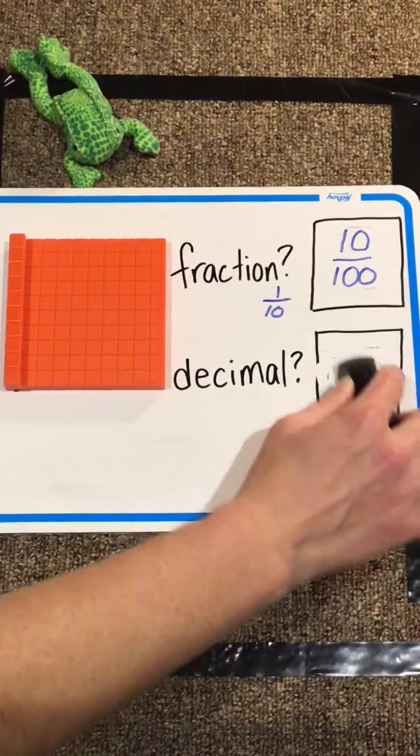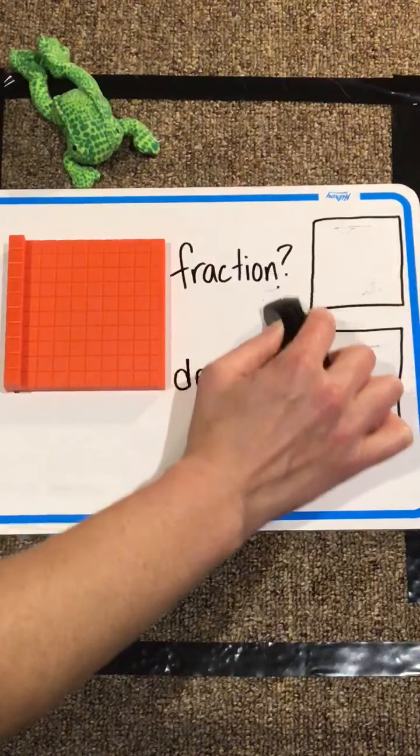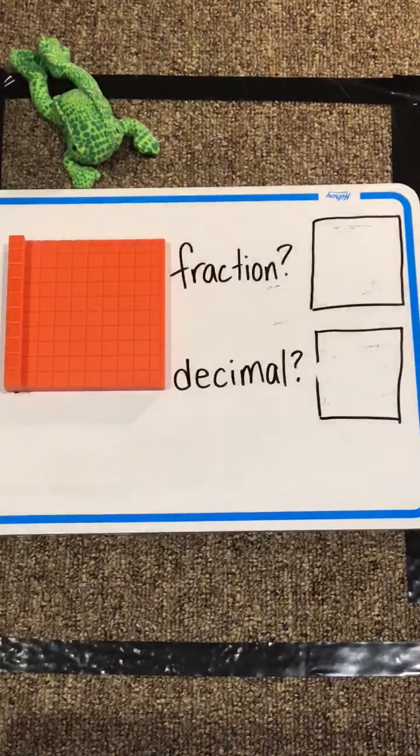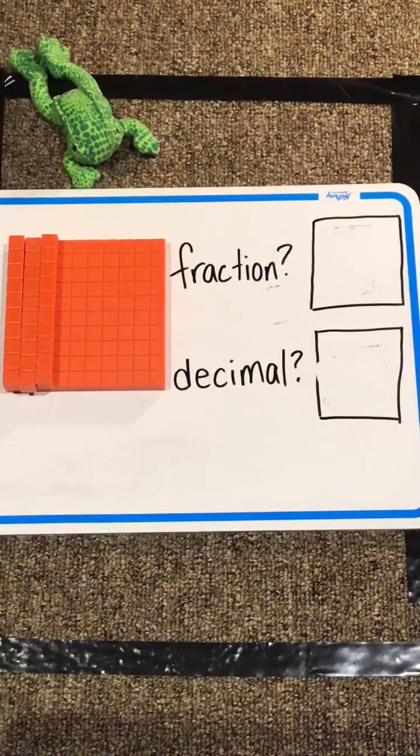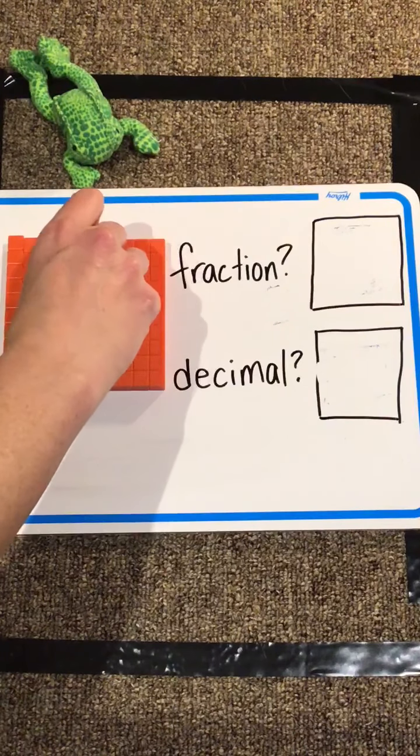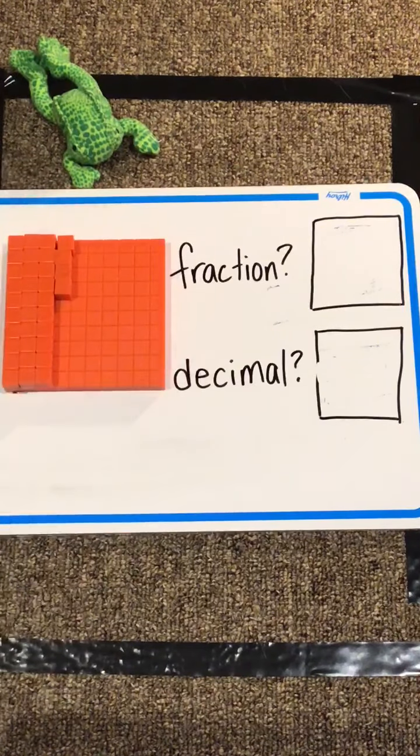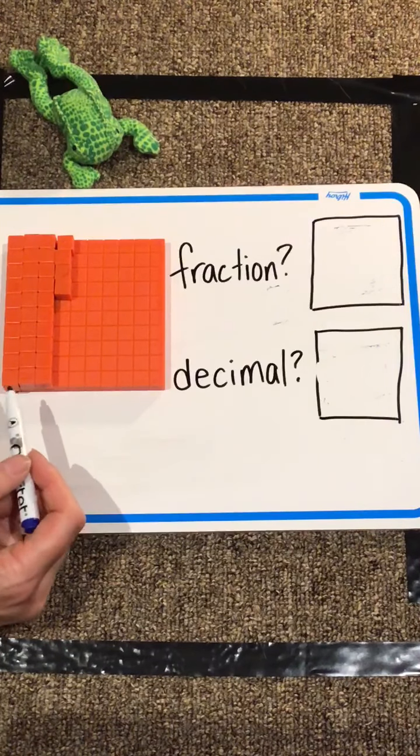What if we have a different amount covered? What if we've got three of those covered, and we use four of these happy little cubes?